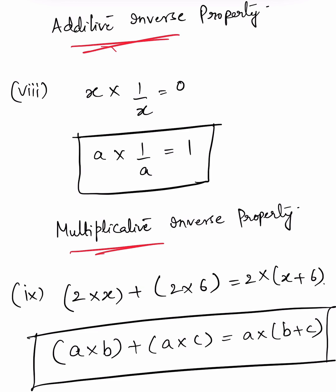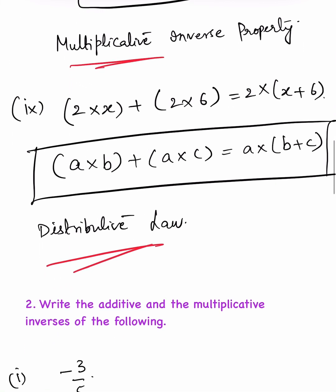x × (1/x) = 1. This is in the form of a × (1/a) = 1. Two numbers are said to be multiplicative inverses of each other when their product is 1. Therefore, this is the multiplicative inverse property. Also, 2×x + 2×6 = 2×(x + 6). Here, 2 is common in both terms, so we take 2 out. This is also the distributive law: a×b + a×c = a×(b + c).